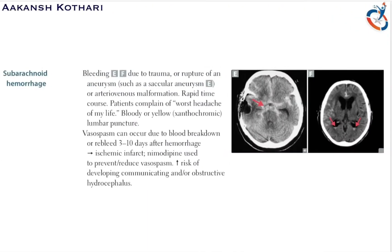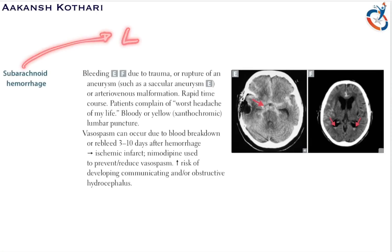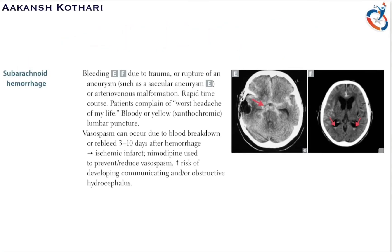Moving to hemorrhages — subarachnoid hemorrhage results from bleeding due to trauma or rupture of an aneurysm, such as a saccular aneurysm, or AV malformations. It has a rapid onset and patients classically complain of the worst headache of their life. When a patient with subarachnoid hemorrhage undergoes lumbar puncture, xanthochromic fluid is found in the CSF.